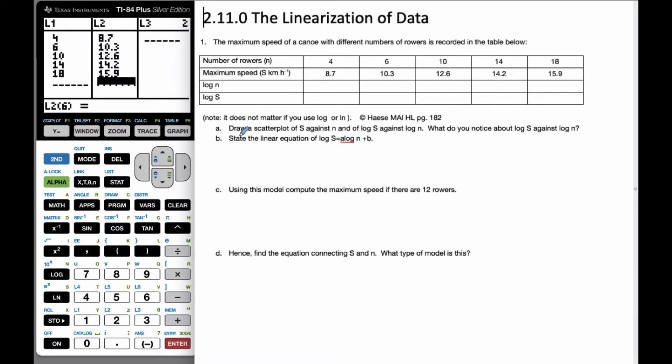And so the first part, part A, says draw a scatterplot of s against n and of log s against log n. And what do we notice about this? And so just a little note, it doesn't matter if we use log or ln, or a natural log, you'll end up with the same conceptual scenario at the end. The numbers will be slightly different, but it works all the same. But because this one specifically says log s to log n, we are going to have to use log.